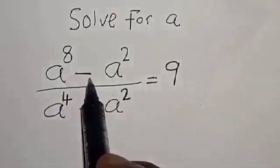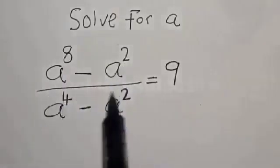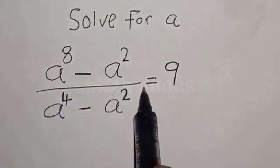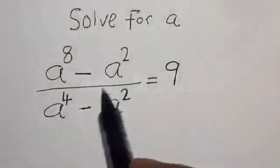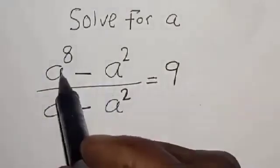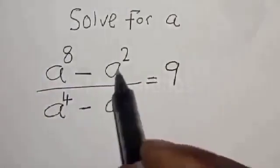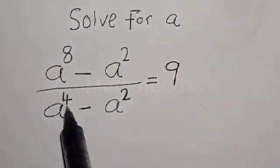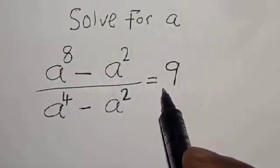We want to find the value of a from this given equation: a raised to power 8 minus a squared, divided by a raised to power 4 minus a squared, is equal to 9.